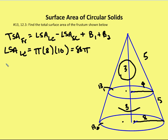And then I'm going to subtract the lateral surface area of the smaller cone, and that equals π times 4, times 5, which equals minus 20π.